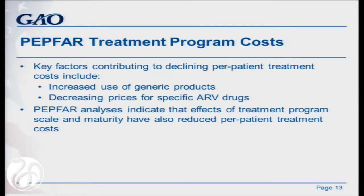There are several factors that contributed to this. The first is the increasing use of generic ARV drug products. PEPFAR estimates that in fiscal years 2005 to 2011, it saved almost $934 million by buying generic instead of equivalent branded products. This will vary by country based on the availability of quality assured products. It has also broadened the selection of WHO recommended products, especially fixed dose combinations, which helps to bring down those costs.